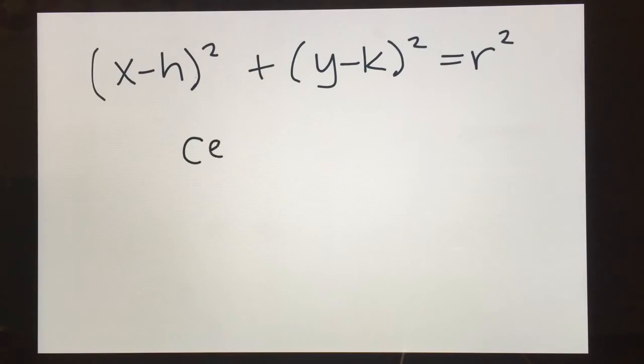So the equation that we're going to start off looking at is x minus h squared plus y minus k squared equals r squared. And the center of the circle is going to be h,k. And the radius of the circle is going to be r.